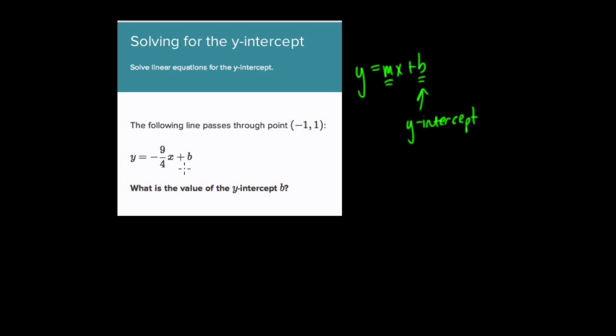So we have to solve for b. And we know that y is equal to negative 9 fourths x plus b. Well, how do we solve for b? There are three variables. Well, in these cases, they give you a point, negative 1, 1. And in this point, negative 1 equals x, and y is equal to 1. So 1 equals y. So they give you a value of x and a value of y that are solutions for this equation. Remember, every point is a solution for a line.